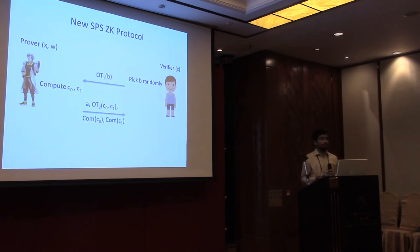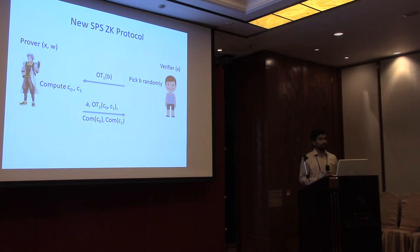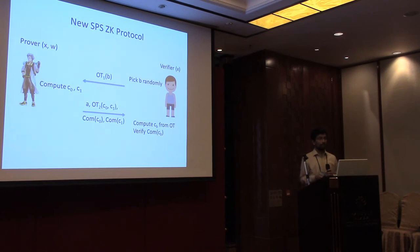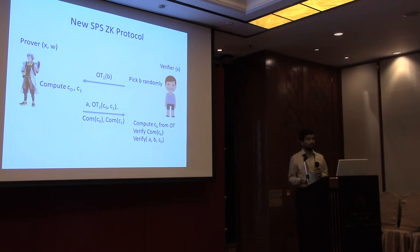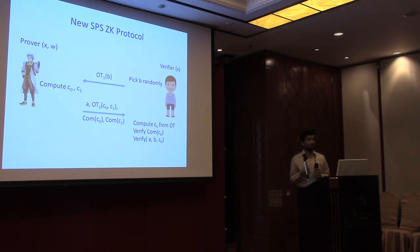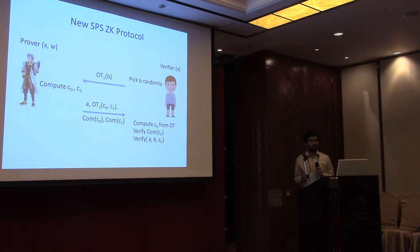We also make the sender send commitments to each of C0 and C1 — this is a standard non-interactive commitment, or even a two-round commitment. To complete verification: the verifier first computes the value Cb by running the OT protocol, then verifies that this is what is committed inside the commitment, and then runs the original Blum's verification check. The commitment and randomness are part of the OT messages, so the verifier sees both the committed message and the randomness via the OT.